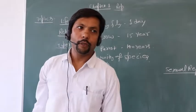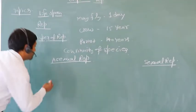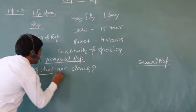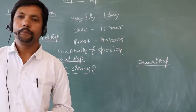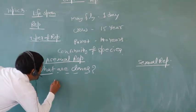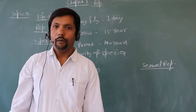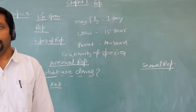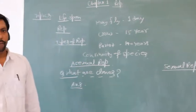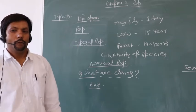All the individuals produced by asexual reproduction are called clones. If the question 'What are clones?' is asked, the answer is: all the individuals produced from asexual reproduction which are morphologically and genetically similar to each other are called clones.